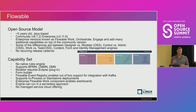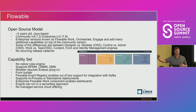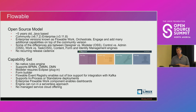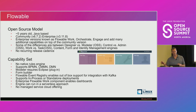Moving on to Flowable — forked off of Activity about five years ago. They have a community and enterprise version, with a slightly different open source model where they provide pieces of all the different projects in community, and enterprise adds additional capabilities on top. They do support all three industry notations. Their modeler is a plug-in into Eclipse. One interesting thing: there's a blog showing how you can run the Flowable engine in an AWS Lambda in a serverless approach, which is pretty cool.